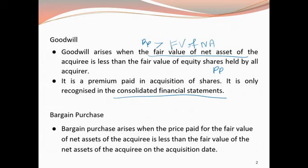A bargain purchase arises when the price paid for the fair value of net assets of the acquiree is less than the fair value of the net assets of the acquiree on the acquisition date. So the purchase price paid is less than the fair value of the net assets, and that leads to a bargain purchase from the business combination.